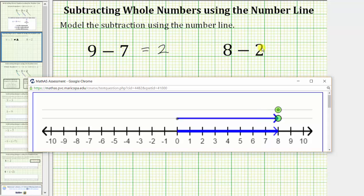And now because we are subtracting two, we move the top point left two units. We are now at positive six on the number line. Eight minus two equals six.